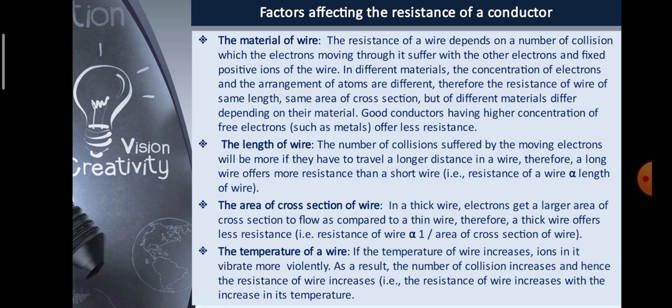The third factor is the area of cross-section of the wire. If the temperature of the wire increases, ions in it vibrate more violently. As a result, the number of collisions increases and hence the resistance of the wire also increases. That is, resistance of the wire increases with increase in its temperature.